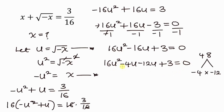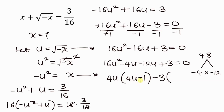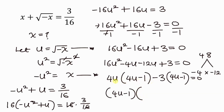From the first two terms, 4u is common — factoring out 4u: 16u squared divided by 4u is 4u, and negative 4u divided by 4u is negative 1, giving 4u(4u minus 1). From the last two terms, 3 is common: negative 12u plus 3 gives negative 3(4u minus 1). So we have (4u minus 1)(4u minus 3) equal to 0.